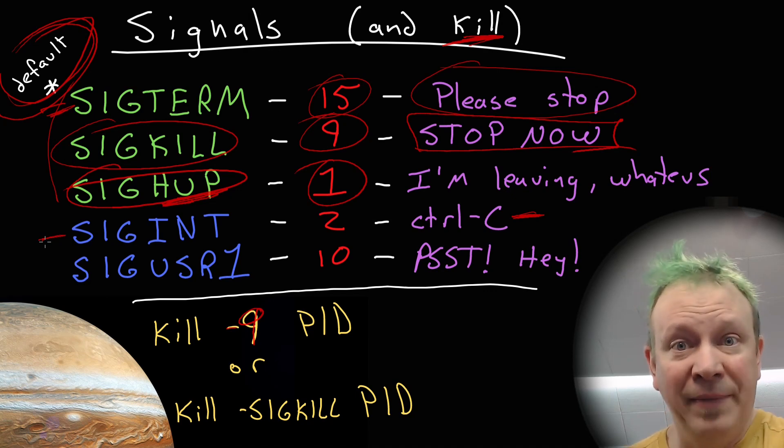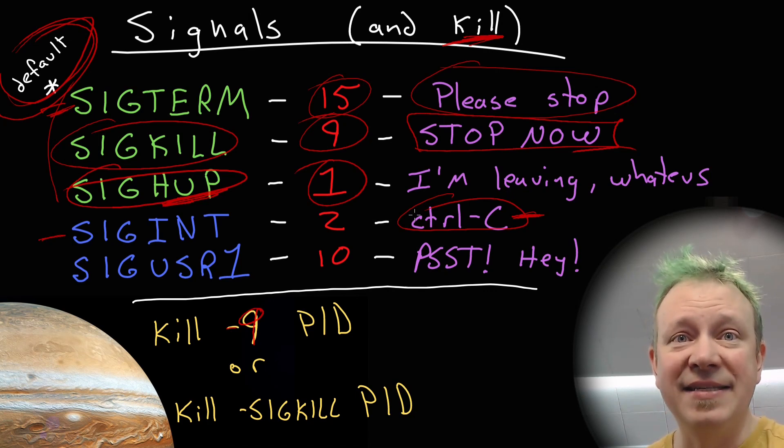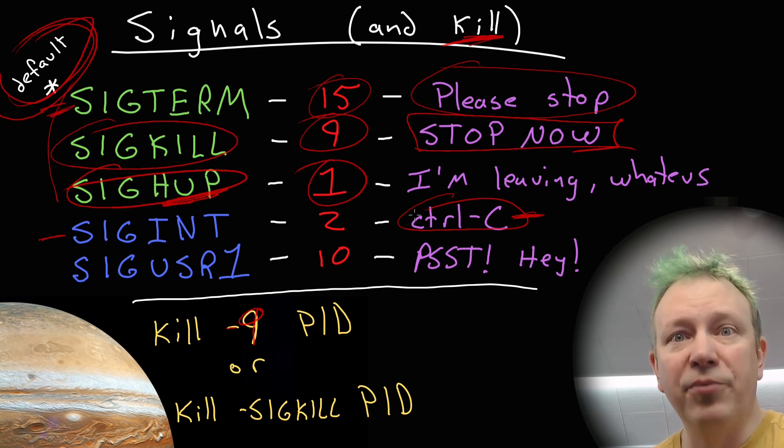Another couple I wanted to mention, SIGINT. This is signal interrupt. And this is what a program gets sent if you type CTRL-C. So you're running a program on the command line, CTRL-C, it sends SIGINT, and most programs will quit if they get SIGINT. Again, they can be programmed to not respond to a SIGINT. So sometimes you do CTRL-C and it won't respond. It's because the program has been programmed in a way that it will not respond to signal interrupt. And so CTRL-C won't stop it.